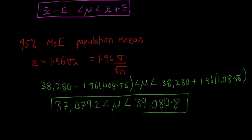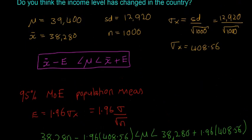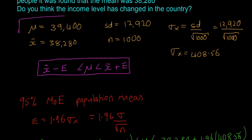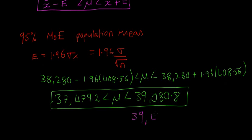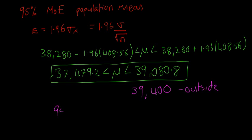And now we look at the test. So our old version of mu here is 39,400. So we compare that with this, 39,400. And that's outside our confidence interval. So that means we can say with 95% certainty, because remember, we're 95% certain that the population mean is between these two numbers. So since this one is outside it, we're 95% sure that the mean income has changed in the country.